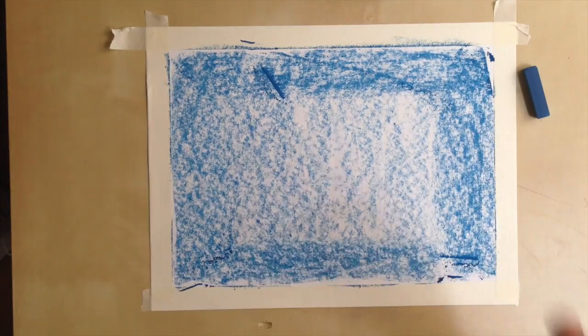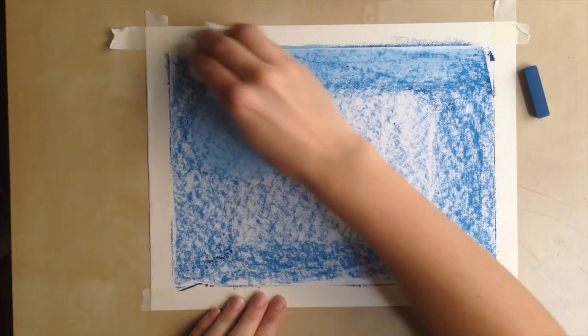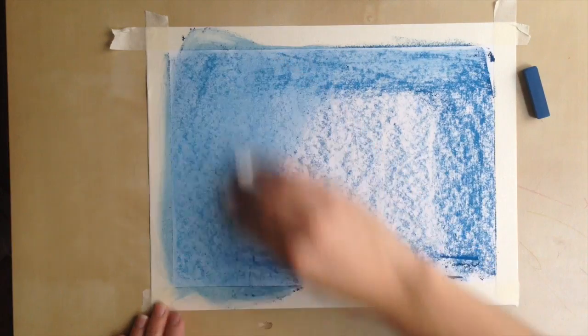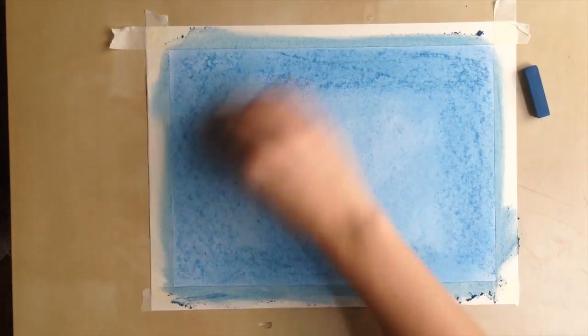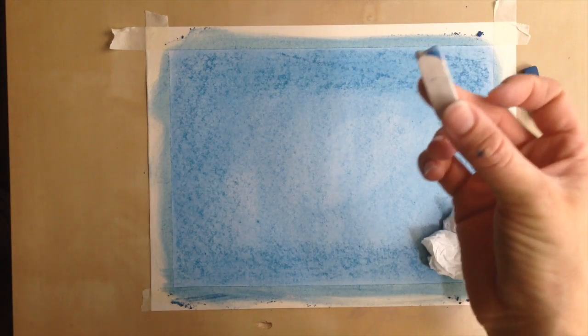Then you want to take your tissue paper and smear it. Do this before you blow off all the chalk. And then what we're going to do is we're going to draw with our eraser.